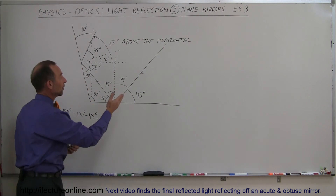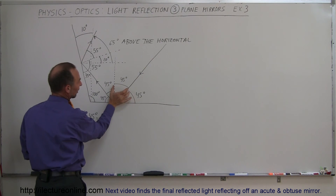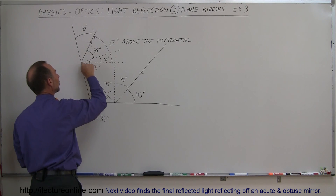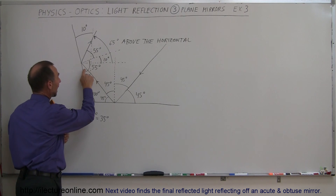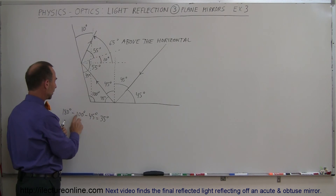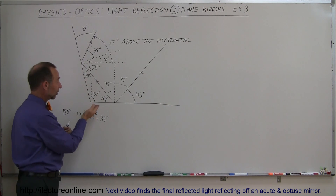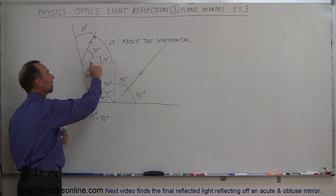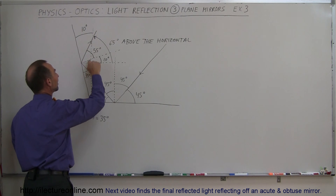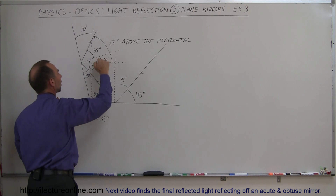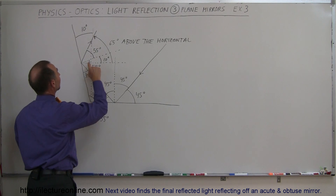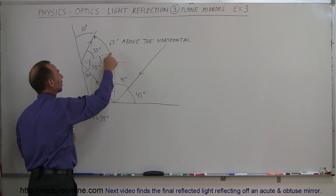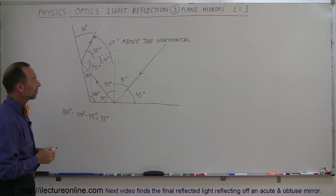Let's go through it again. We have a beam coming in at 45 degrees relative to the horizontal, so the incident angle is 45 degrees relative to the normal, meaning the reflected angle is also 45 degrees. To find the angle of incidence on the second mirror, we use the triangle: three angles add up to 180 degrees; subtract 45 degrees and 100 degrees (which is 90 plus 10), giving 35 degrees. That means the angle of incidence on the second mirror is 90 minus 35, or 55 degrees. Since the reflected angle is also 55 degrees, and the normal is 10 degrees above horizontal, the final beam direction is 55 plus 10, or 65 degrees above the horizontal. And that's how we do that.